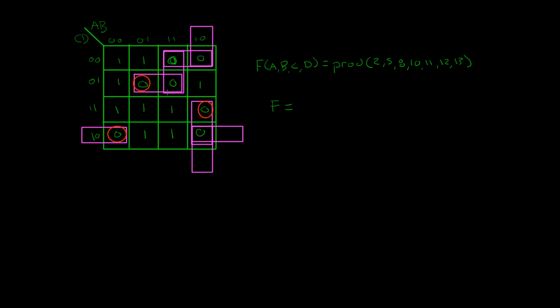Now let's write the function. Starting with this one: we go up and see that B is one, and C and D are zero and one. Remember, wherever we have a one it's now knotted. That gives us the first term for the product of sums. Now I'm going to go down and use this prime implicate to take care of this distinguished zero.